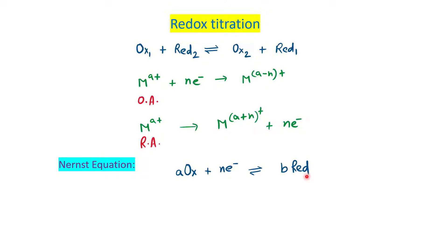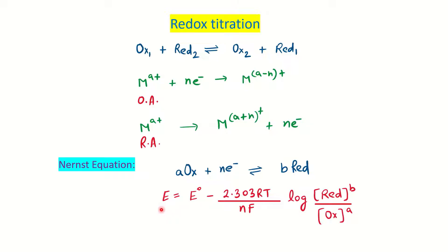How to write the Nernst equation for a given reaction: E = E° minus (2.303 RT / nF), where R is the gas constant, T is the temperature in Kelvin, n is the number of electrons involved in the redox reaction, and F is Faraday's constant. The logarithm term is the concentration of the reducing species raised to its stoichiometry divided by the concentration of the oxidizing species raised to its stoichiometry.